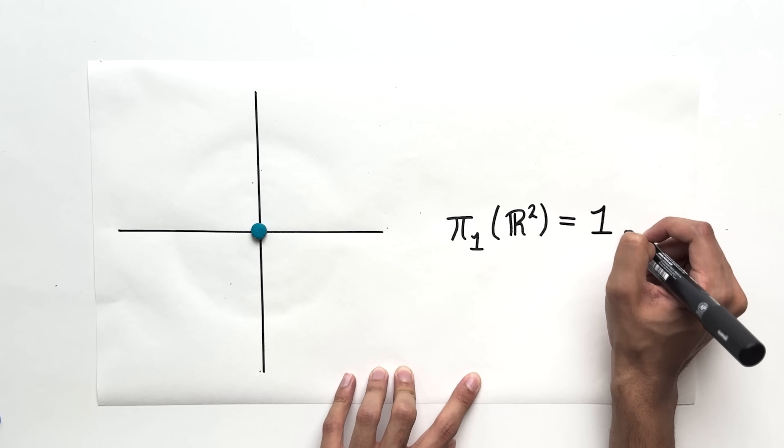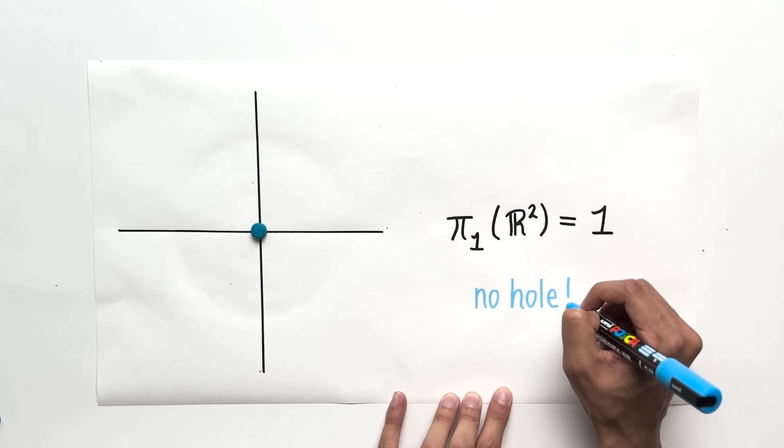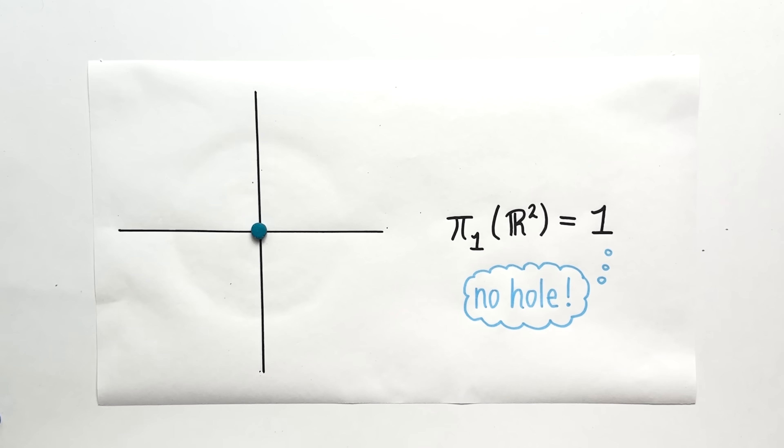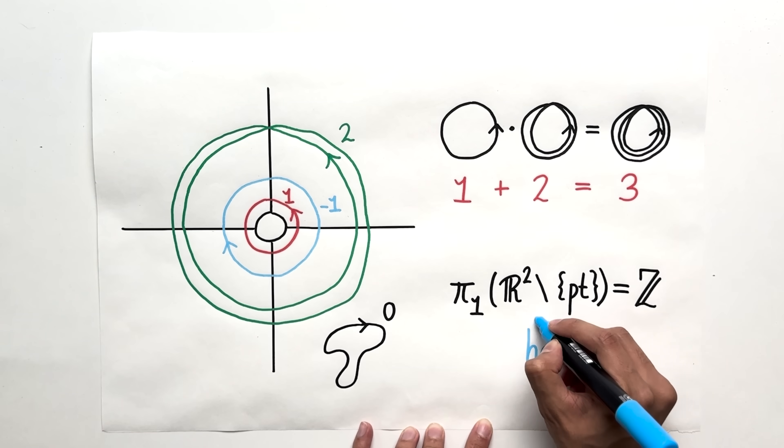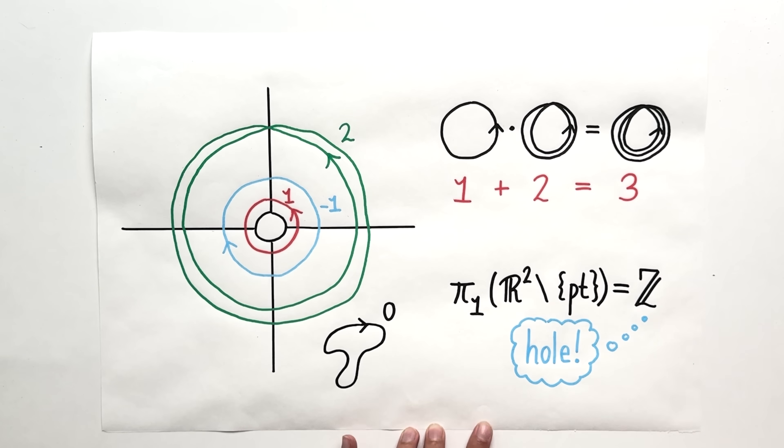Now you might argue that we haven't done anything interesting, because, I mean, it's obvious that the plane doesn't have a hole, and it's obvious that the plane minus a point has a hole. Can the fundamental group give us information that isn't already intuitively obvious? The answer is yes.